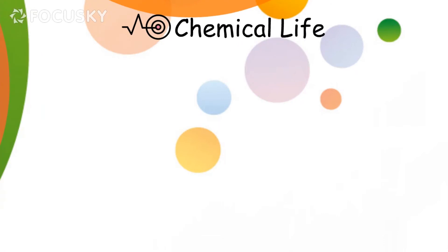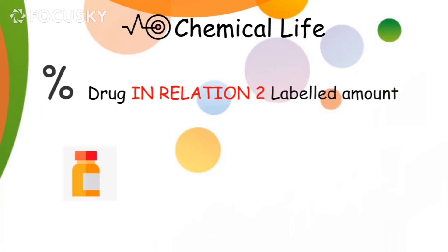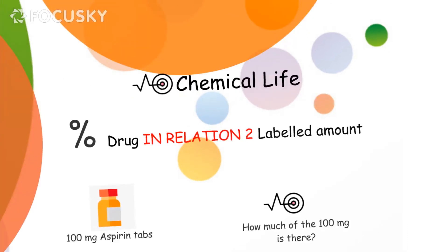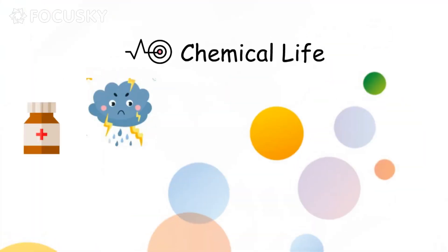The chemical life reflects the percentage of the drug present in relation to the labeled amount. For example, if there are 100 milligrams of aspirin in aspirin tablets, the chemical life tells us how much of those 100 milligrams is actually present at a certain time. Sometimes drugs decompose or break down into other chemicals when subjected to certain environmental conditions.